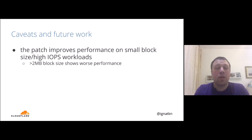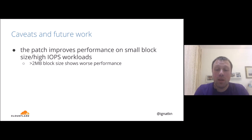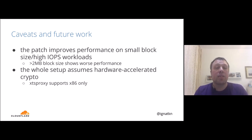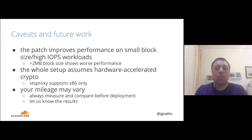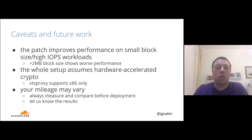There are some caveats with the current patch. From our testing, the patch improves performance on small block size, high IOPS workloads. If you have a workload with larger block sizes — more than 2 MB — our benchmarks showed worse performance. The setup presented assumes hardware-accelerated crypto, since the XTS proxy module supports only x86 platforms. Your mileage may vary — don't immediately enable this flag on your system. Measure first, compare results before widespread deployment, and let us know your results.